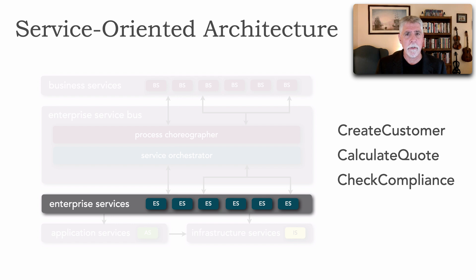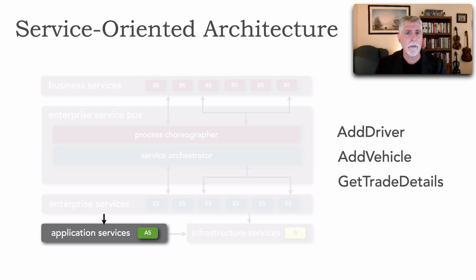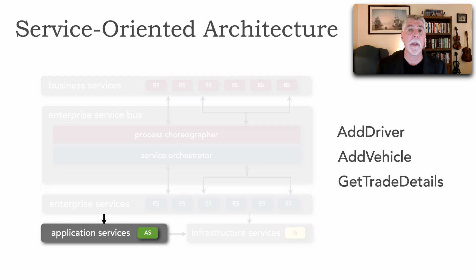Enterprise services relied on a third type of service in the taxonomy called application services. These were very fine-grained services scoped to a particular application context — for example, in insurance, the act of adding a driver, adding a vehicle, or getting trade details. More fine-grained, generally not shared across the organization, but scoped to a particular application.